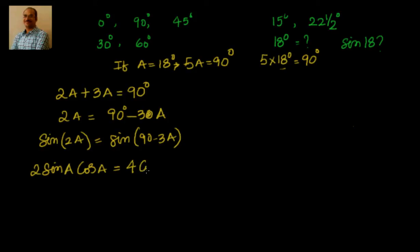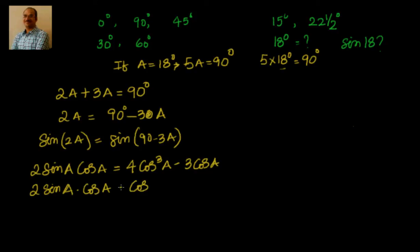What is the value of cos(3a)? We have learned that it is nothing but equal to 4 cos³(a) minus 3 cos(a). So we have 2 sin(a) cos(a) equals 4 cos³(a) minus 3 cos(a). I can take cos(a) common on the right side and it becomes 4 cos²(a) minus 3.